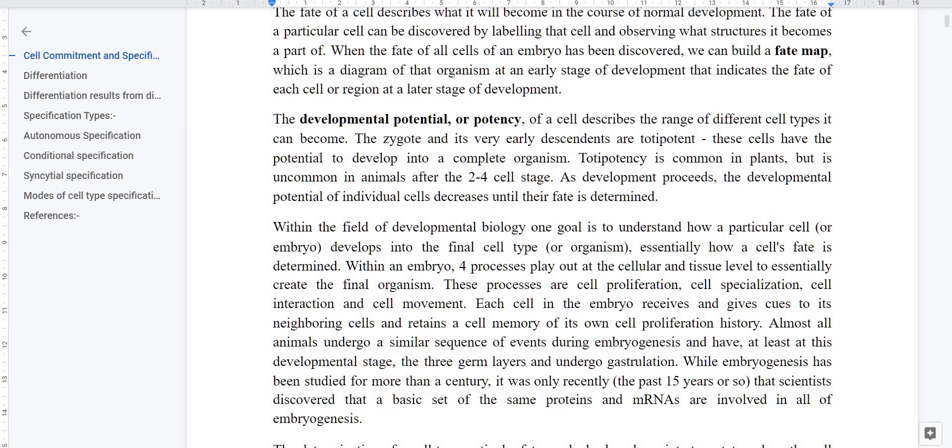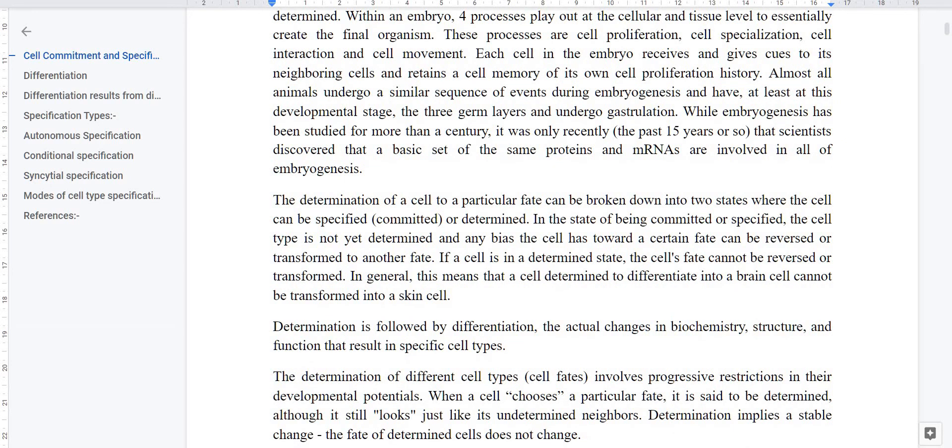Now we have to understand how cell specialization happens after cell proliferation at the blastula stage. If we are studying the developmental process, we already know its stages: fertilization, zygote, morula, blastula, and then gastrulation. We have to study that when these stages proceed from zygote to gastrula, what is the role of proteins and mRNA inside the embryo. Now if we want to determine the fate of a cell in the organism, we have to look at two stages.